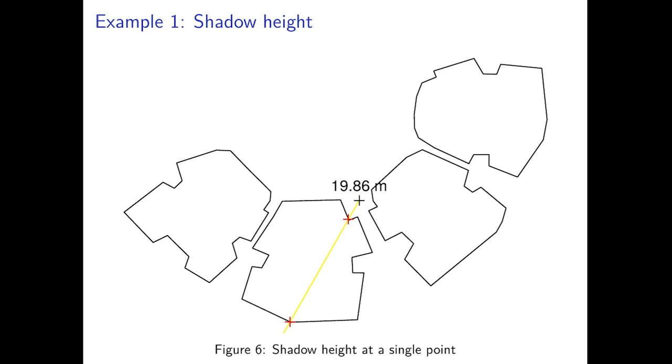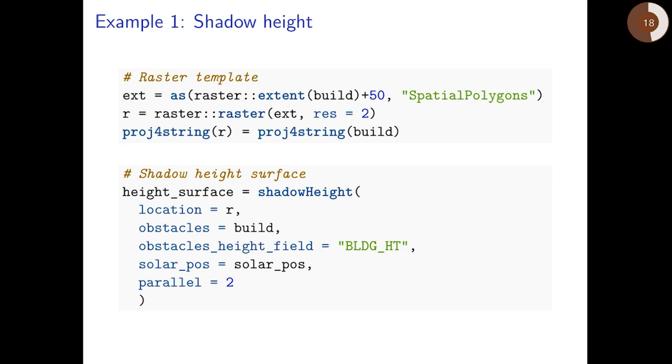This can be visualized as follows. Here we can see in the center the queried point. The yellow line points toward the sun azimuth. In red we can see the intersection points with the obstacle outline which results in a shadow height of 19.86 meters.